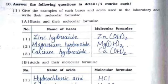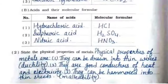Question 10: answer in detail. First: give examples of bases and acids used in the laboratory with their molecular formulas. Bases include zinc hydroxide, magnesium hydroxide, and calcium hydroxide. Acids include hydrochloric acid, sulfuric acid, and nitric acid. You can see the molecular formulas from the table and complete them.